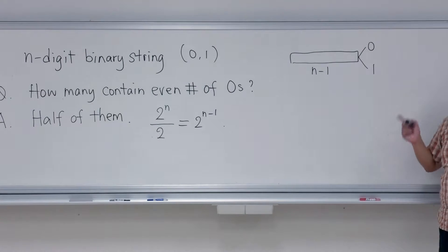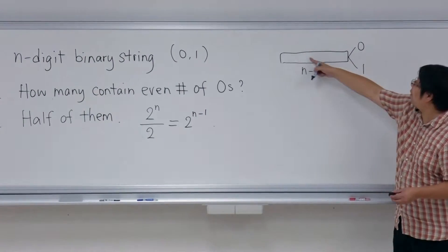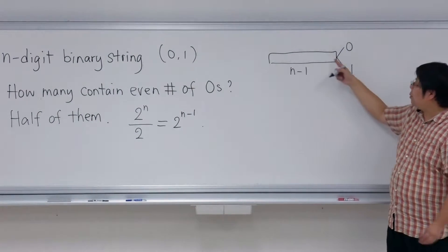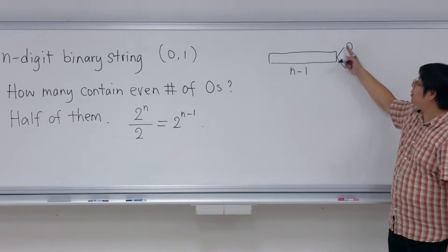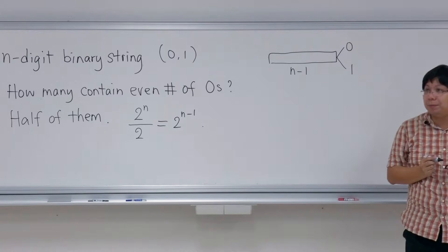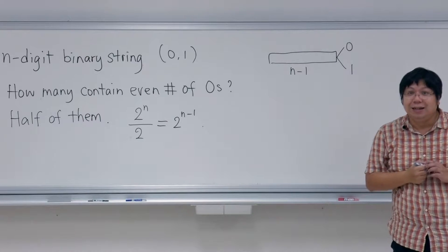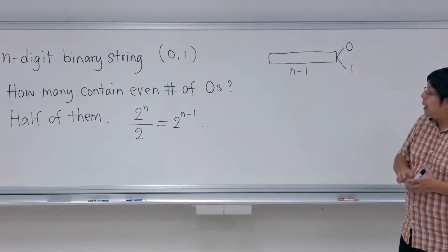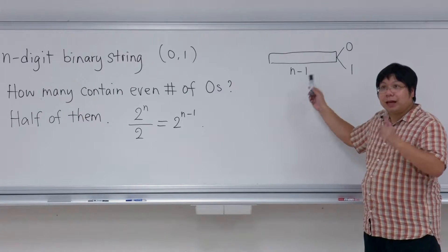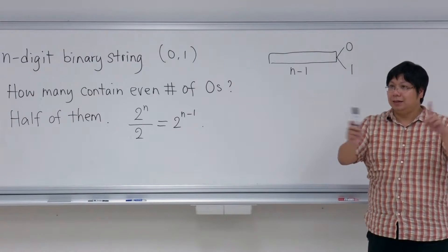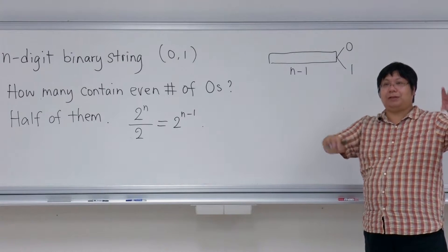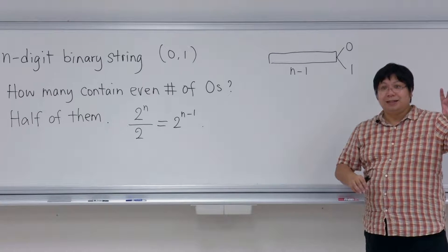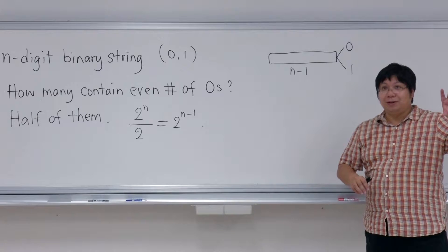One of them has even number of zeros and the other has odd number of zeros. Maybe this one has even number of zeros and that one has odd, or vice versa. So based on exactly the first n minus one digits, we are grouping things together — each group has two strings.